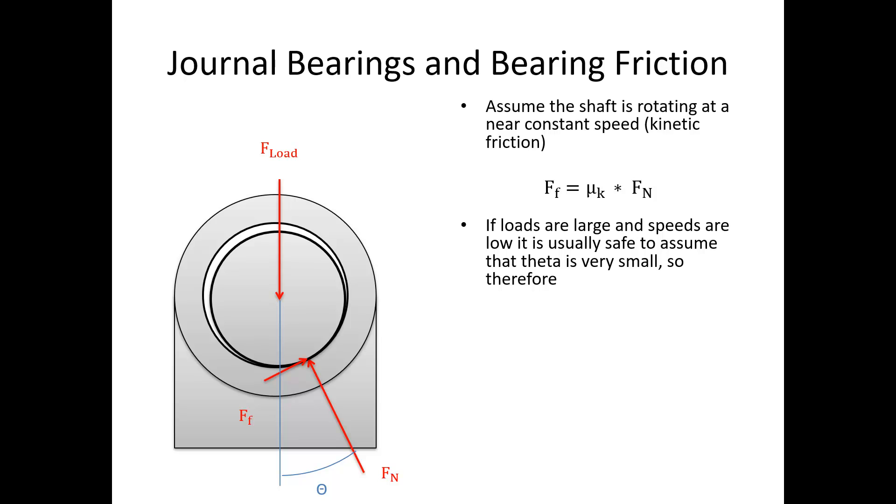If the loads are large and speeds are generally low, it's usually safe to assume that theta is very small. Therefore the normal force is approximately equal to the load force. That's going to be our approximation there. Generally we only want to use journal bearings when loads are large and speeds are low. That is the sweet spot for this type of bearing.